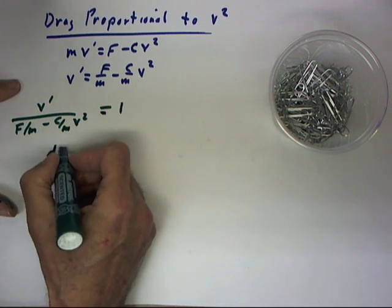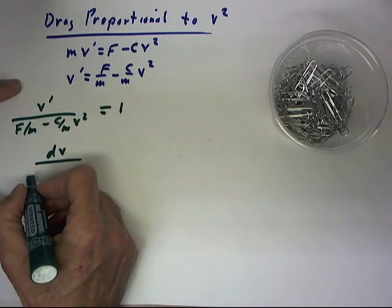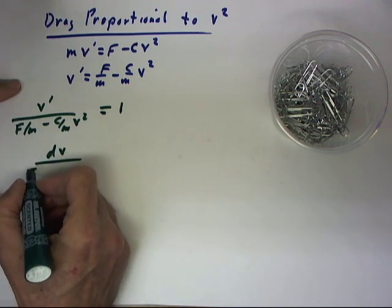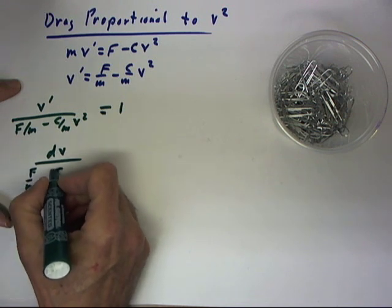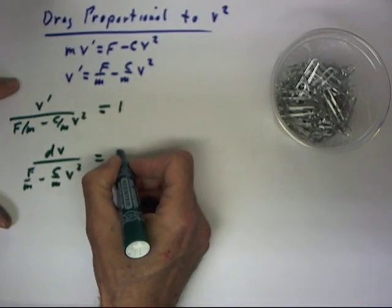v' is dv/dt, so this easily rearranges to dv over (f/m - c/m v²) = dt.